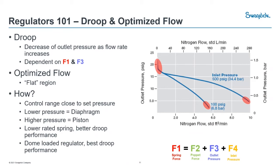Droop is mainly your decrease of outlet pressure as your flow rate increases. As flow demand increases, the poppet opens up more and more to supply gas through the seat. Going back to our balance of equations, this is dependent on F1 — our spring force — and F3 — our outlet pressure. As you turn down the handle, you increase spring force and that increases your outlet pressure. Reading this graph from left to right, as our flow demand increases, our outlet pressure starts to decrease — that's really what droop is. We want to be operating in this area, and if we can get this area to be as flat as possible, that's where we get the most predictability out of our regulators.